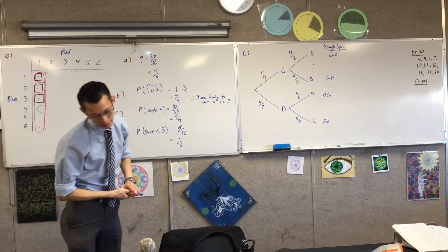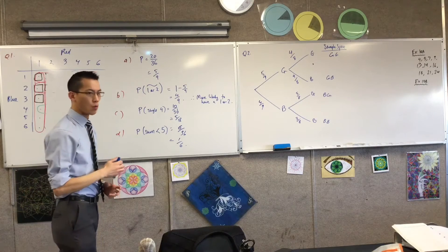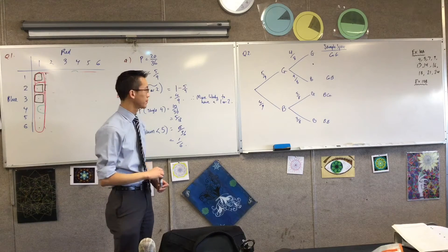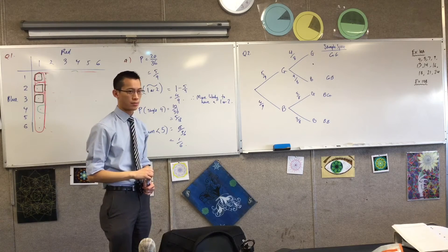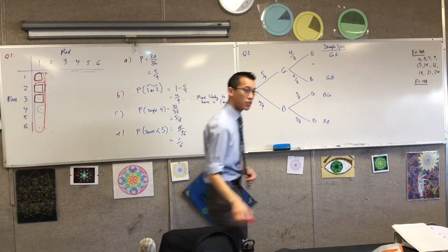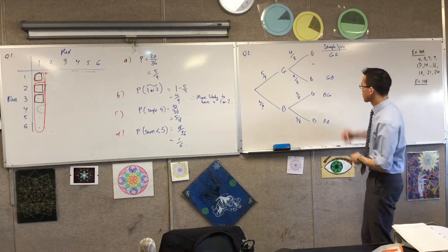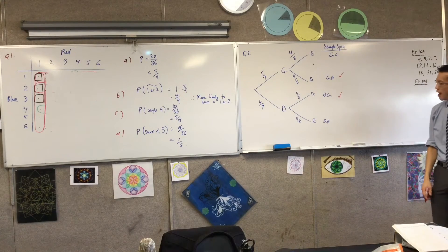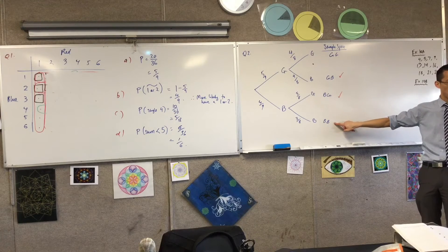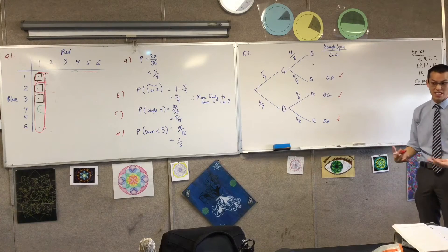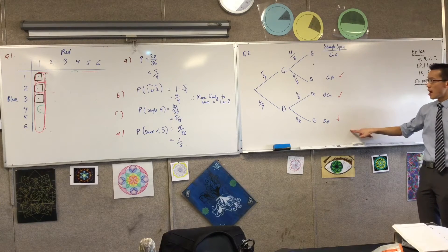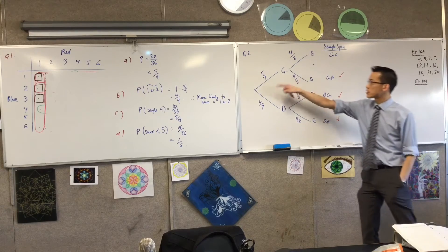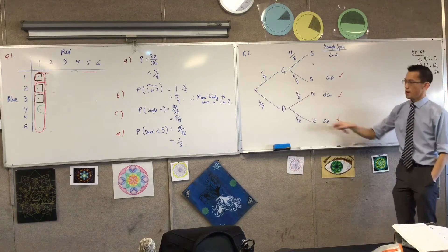Now the question: what is the probability of choosing at most one girl? How many different ways can I do this? At most one girl — so clearly one girl is okay. These each have one girl. And if I go this route — boy-boy — have I chosen at most one girl? Yes, because zero girls is still less than one girl, so this is an okay option. I've got these options, and I can multiply through each branch and add them all up.